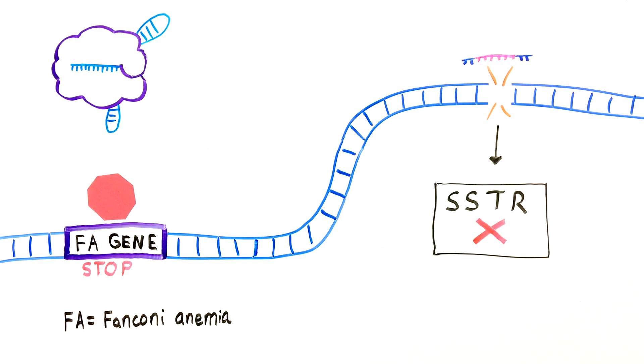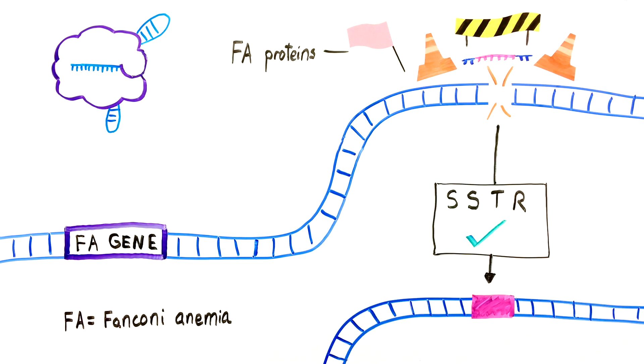Further experimentation revealed that FA proteins migrate to the site of the Cas9 break and act like a traffic signal to direct repair pathways like SSTR.